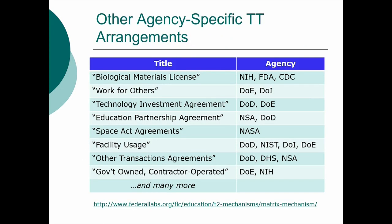There are other kinds of agreements specific to particular federal agencies. For NIH, for example, we have something called the Biological Materials License, where we can physically transfer biological materials and some other tangible inventions — but only NIH can do it, other federal agencies cannot. Other federal agencies have things like Work for Others agreements or Space Act Agreements for NASA specifically. I hope you found this information useful, and if you have any questions, please direct them to the program coordinator.